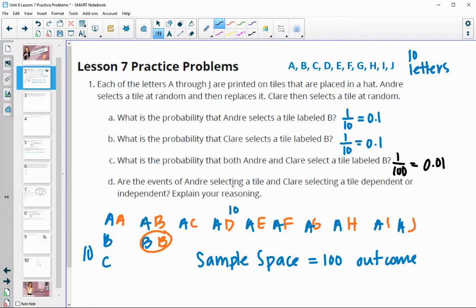Are the events of Andre selecting a tile and then Claire selecting a tile dependent or independent? These are going to be independent because it doesn't matter what one does. So independent because the selecting of the tile doesn't impact the other.